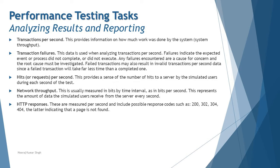Next is transactions per second, also known as throughput. This provides information on how much work was done by the system during the entire execution timeline. Throughput is measured as the number of transactions performed per unit time, and derives the count of activities or throughput performed by the system during the elapsed time.